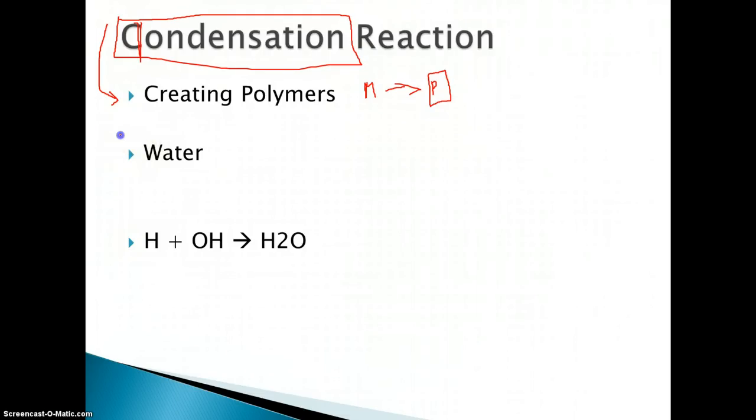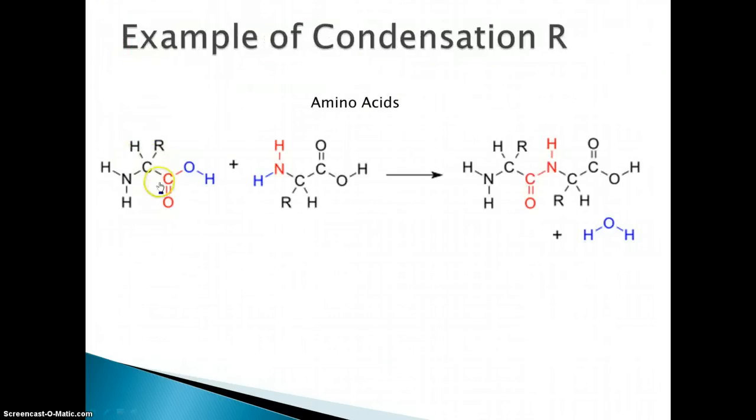And we can show this in an example. So here's an example of condensation reactions. Here are two amino acids, two monomers. And what's going to happen is that these two will react and make this big polymer.